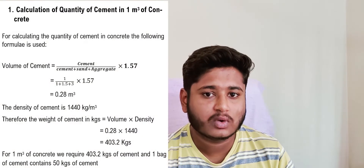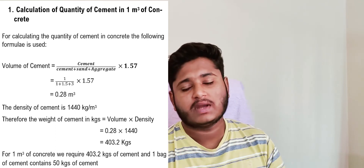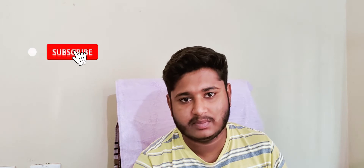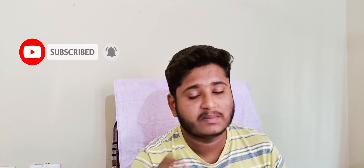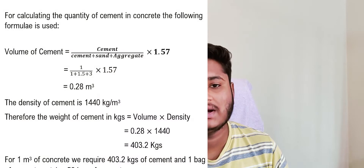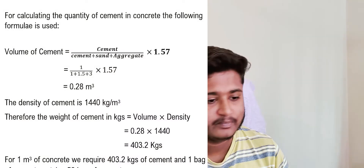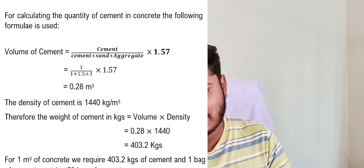Now we calculate the cement quantity required for 1 cubic meter of concrete using a basic formula: if the mix proportion is A:B:C and the total volume is V, then the quantity of A equals A divided by (A+B+C) multiplied by V. Applying this to cement: volume of cement = 1 ÷ (1 + 1.5 + 3) × 1.57 = 0.28 cubic meters. This is the volume of cement required.